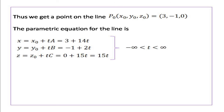So, we have a vector parallel to the line and a point on the line. Substituting into the standard parametric equation for the line: x equal to x0 plus ta equal to 3 plus 14t; y equal to y0 plus tb equal to minus 1 plus 2t; z equal to z0 plus tc equal to 15t, where minus infinity less than t less than infinity.